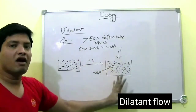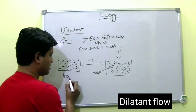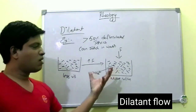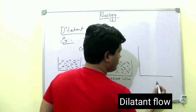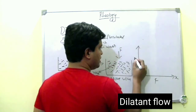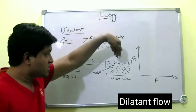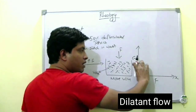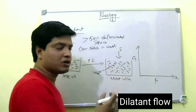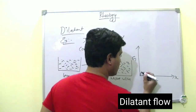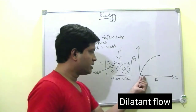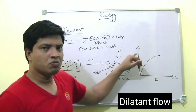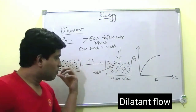Now, how can I draw the graph for this? The system is less viscous at low shear and more viscous — almost solid — at high shear. If I draw the graph with shear stress on the x-axis and rate of shear on the y-axis, as I apply more shear stress, there is almost no movement. So the x-axis value increases, but the y-axis value increases only very slightly, because there is no moment — no flow.